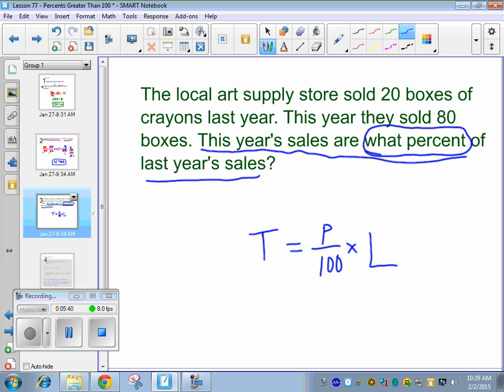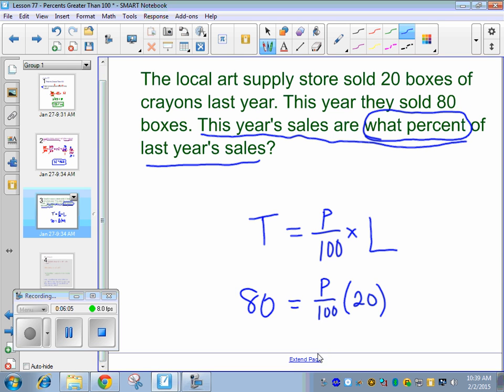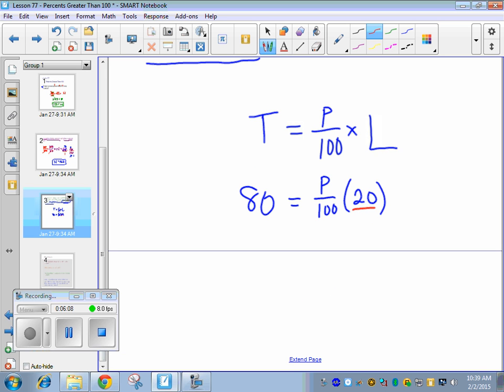Now filling in what you know. The local art supply store sold 20 boxes of crayons last year. Where does the 20 go? L. Good. We sold 20 last year, so we're going to plug in 20 for last year. This year they sold 80 boxes. So where do I put the 80 in for? T. This year we sold 80 boxes. This 20 is really over 1. And we can go ahead and multiply it to the numerator so that we have 20P over 100.